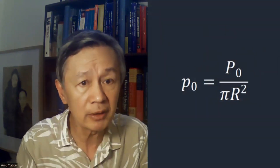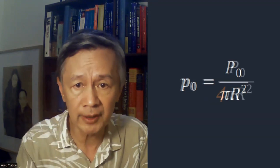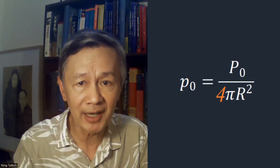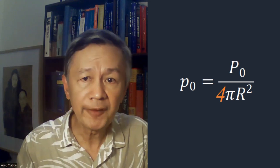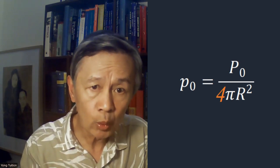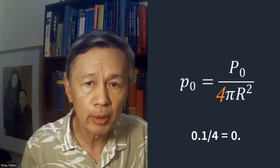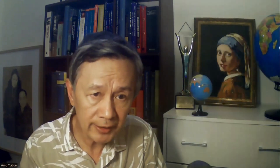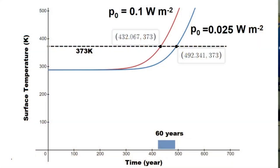If he really needs to take extra thermal energy into account — not waste heat, but extra thermal energy to be exact — then he should divide his power capital P by the area of the surface of the Earth, 4 pi r squared, rather than the Earth's cross-section area seen from the sun, pi r squared. If he did so, then the initial intensity would be 4 times smaller: 0.1 divided by 4 equals 0.025 W per meter squared. As shown in this graph, when this correction is made, the predicted boiling point temperature would be delayed by 60 years, if Murphy's model were otherwise reasonable.